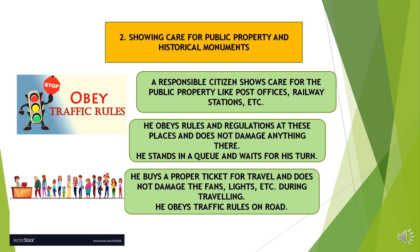Next, showing care for public property and historical monuments. A responsible citizen shows care for public property like post offices, railway stations, etc. He obeys rules and regulations at these places and does not damage anything there. He stands in a queue and waits for his turn. He buys a proper ticket for travel and does not damage the fans, lights, etc. during travelling. He obeys traffic rules on the road.